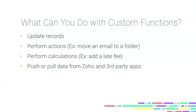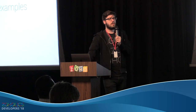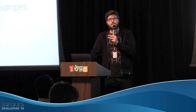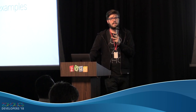Basically, Deluge allows you to add custom functions to Zoho apps. Functions are essentially just new things that you can do — it's like teaching the computer a new trick. It kind of boils down to a few key things like being able to update records, perform different actions — like moving a mail to a folder automatically depending on some criteria — performing calculations like adding a late fee onto an invoice, or pushing and pulling data from Zoho apps or third party apps as well.